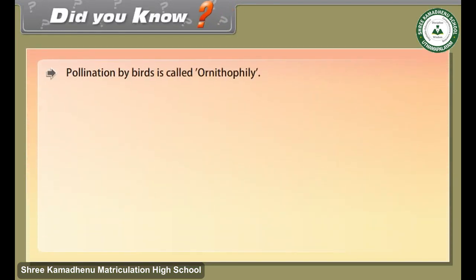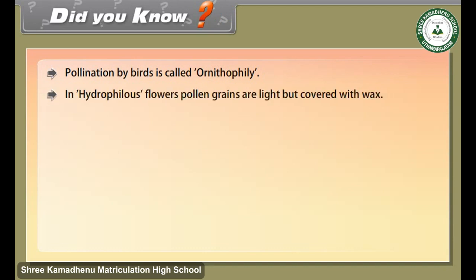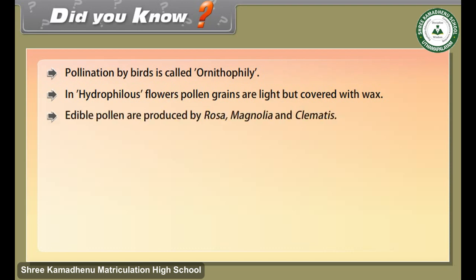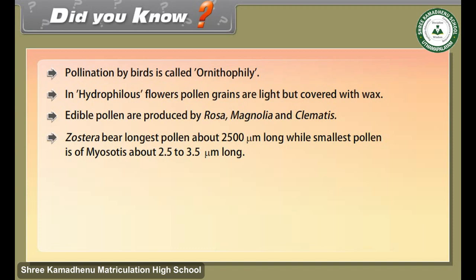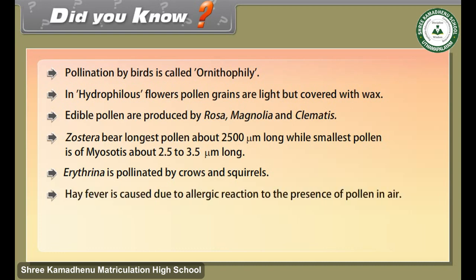Did you know? Pollination by birds is called ornithophily. In hydrophilous flowers, pollen grains are light but covered with wax. Edible pollen are produced by rosa, magnolia, and clematis. Zostera bears the longest pollen at about 2500 micrometers long, while the smallest pollen is of Myosotis at about 2.5 to 3.5 micrometers long. Erythrina is pollinated by crows and squirrels. Hay fever is caused due to an allergic reaction to the presence of pollen in the air.